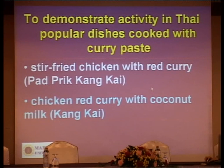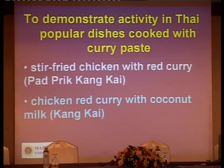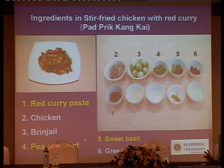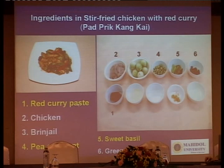These two dishes, when we conducted our experiment, were already ready to eat. We just extracted the compounds from these two popular dishes. The stir-fried chicken with red curry is composed of six ingredients. The common ingredient between the two popular dishes, highlighted in yellow, includes red curry paste, chicken, krachai, pea eggplant, sweet basil, and green peppercorn.